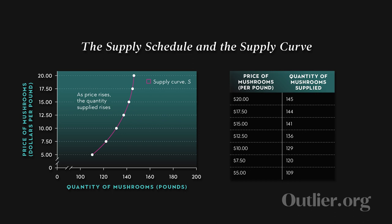If the price drops to $17.50, then farmers are willing to sell only 144 pounds. When the price drops even further to $15, then farmers are willing to sell even fewer — 141 pounds. So we can see that there's a relationship between the per unit price and the quantity.